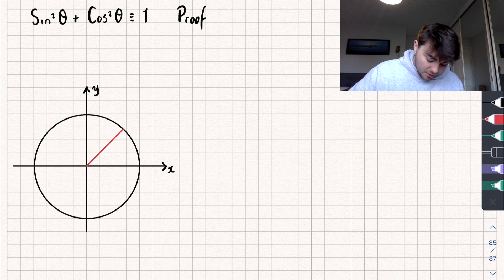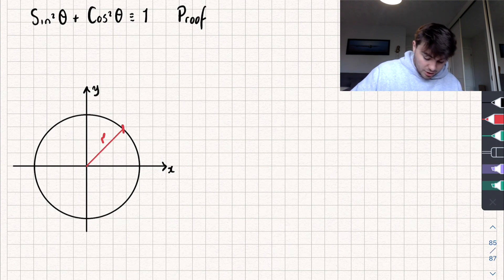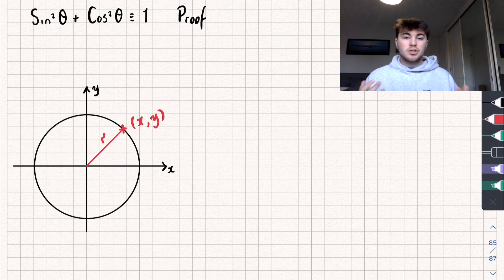I'm now going to add on a radius to this circle and I'm going to say the radius is of length r. Now the point where this radius touches my circumference, this point here I'm going to say that has coordinates x and y like so.